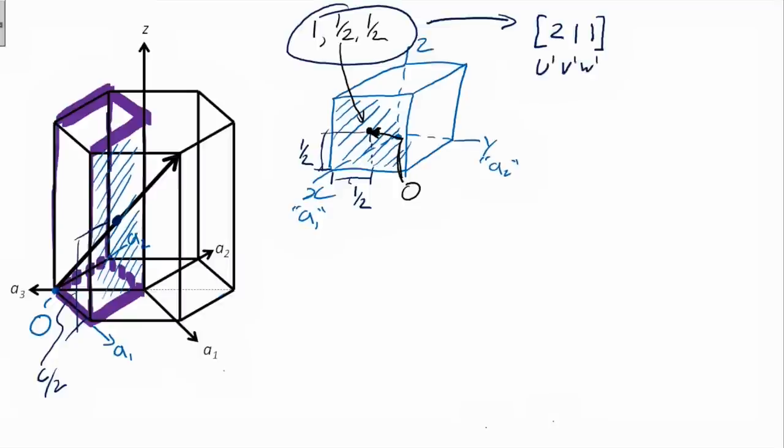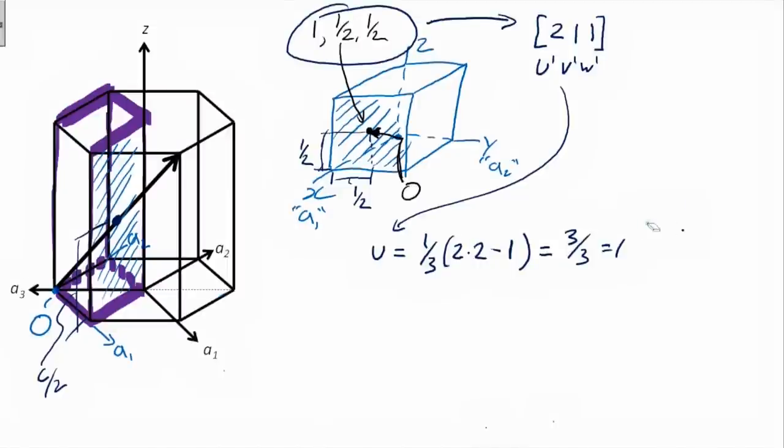So then we just have to convert two, one, one into our four axis system. So one third times two times two minus one is going to give us four minus three. That's actually one. And then V is going to be one third times two times one minus two. So that's zero. So that's zero. And then T is one plus zero, made negative, so it's negative one. And W, of course, is just W prime, which was one.